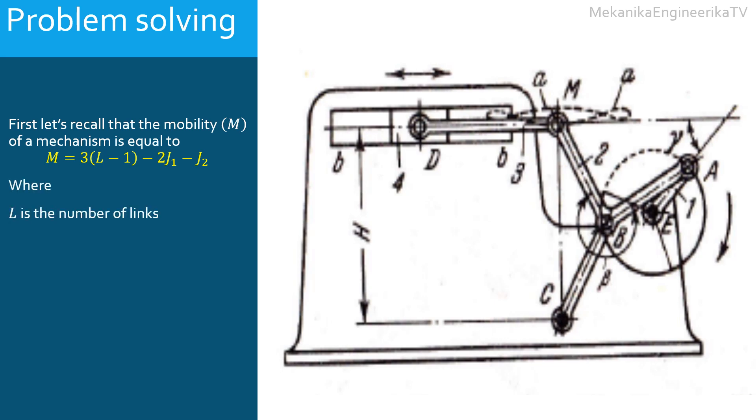Where L is the number of links in the mechanism, the number of mechanical parts. J1 is the number of lower pairs, the kinematic pairs that each allow one degree of freedom. And J2 is the number of higher pairs, the kinematic pairs that allow two degrees of freedom each.